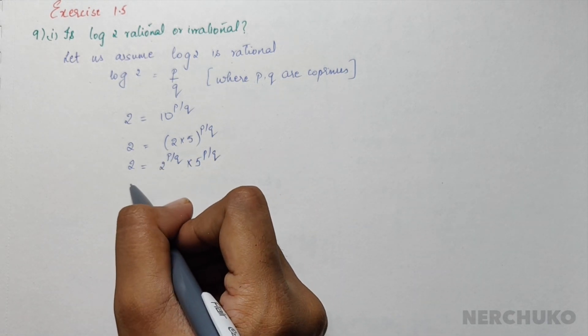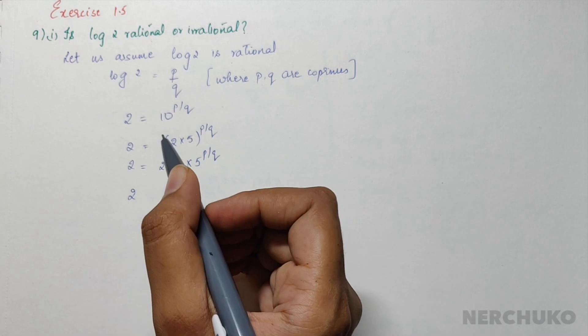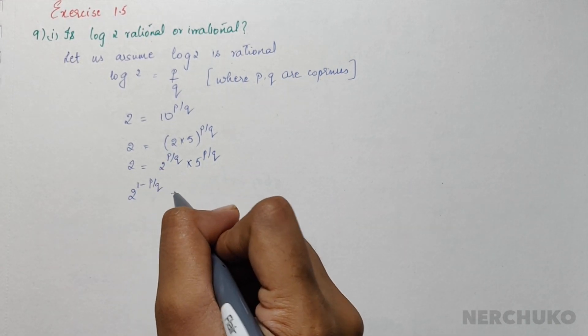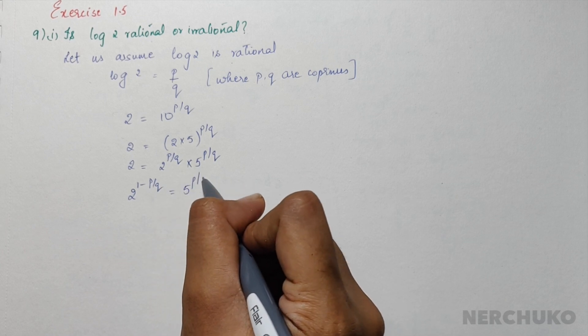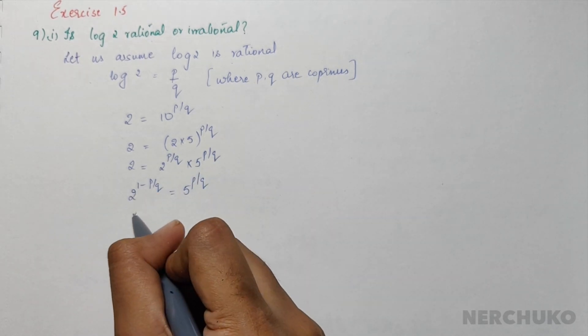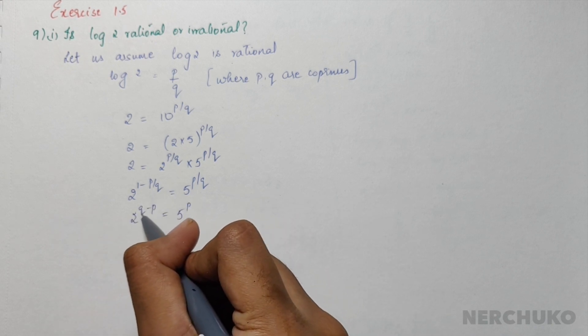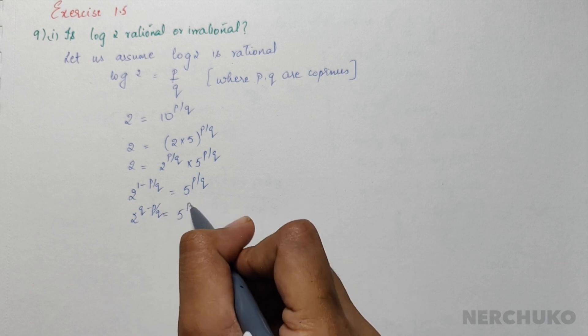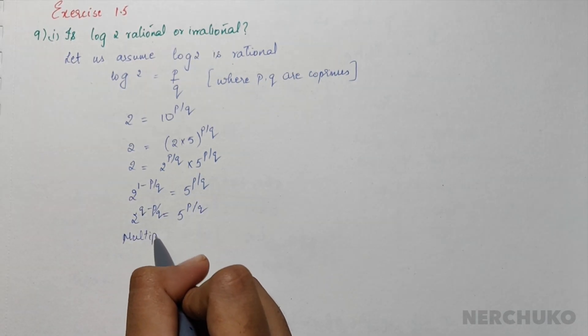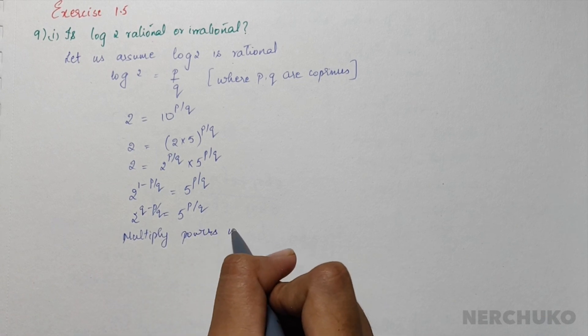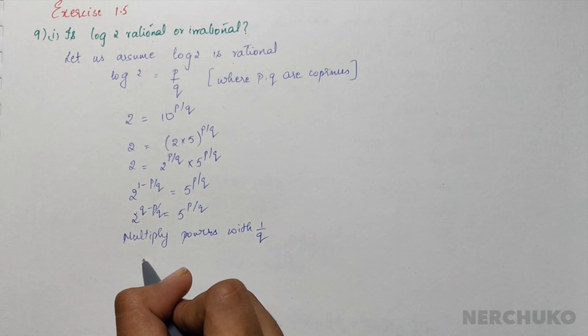If I move this to the left hand side, I would have 2 power (1 minus p/q) equal to 5 power p/q. So 2 power (q minus p)/q equals 5 power p/q. Then I would have 2 power q minus p equal to 5 power p.